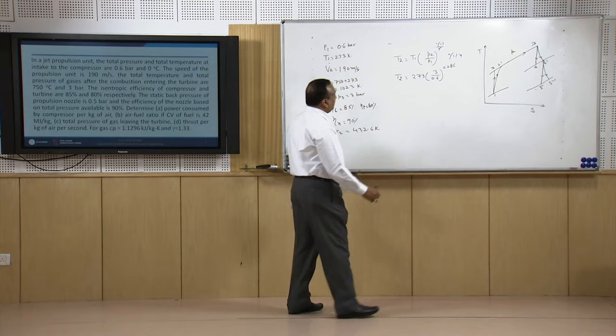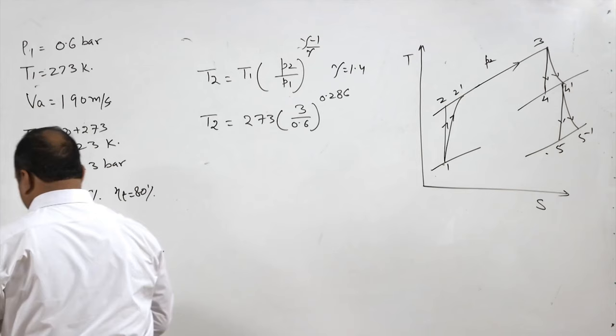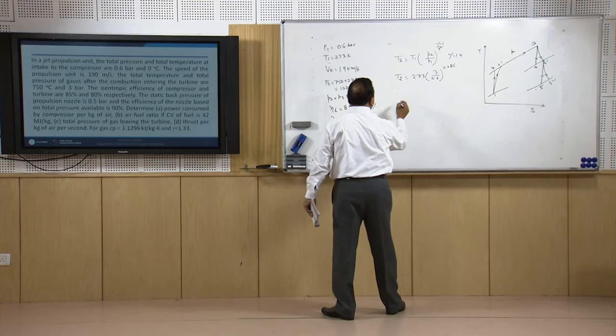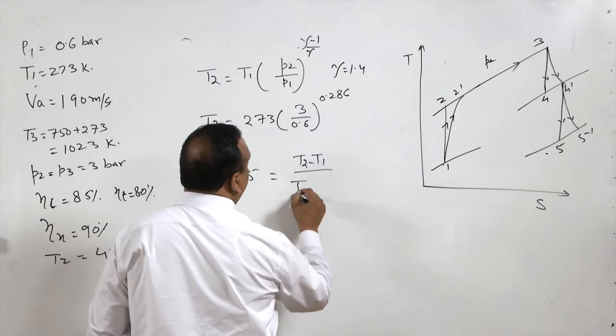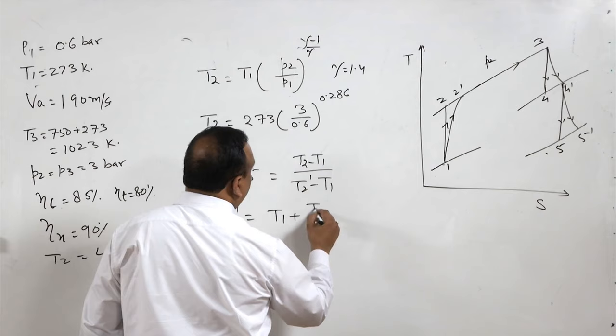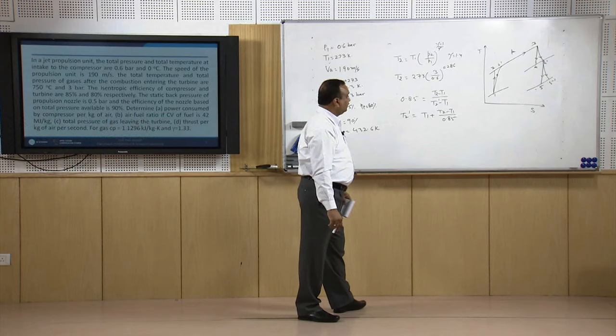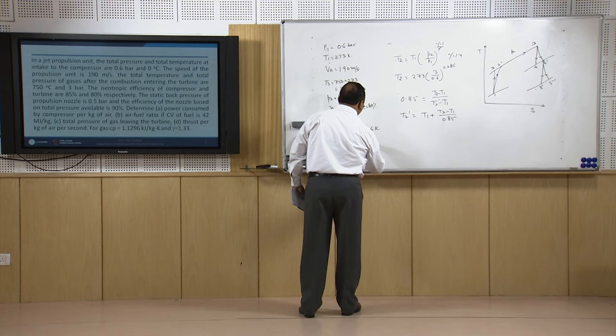Next, we find T_2-dash using compressor efficiency of 85%: η_c = (T_2 − T_1)/(T_2' − T_1) = 0.85. Therefore T_2' = T_1 + (T_2 − T_1)/0.85, giving T_2' = 457.2 K.